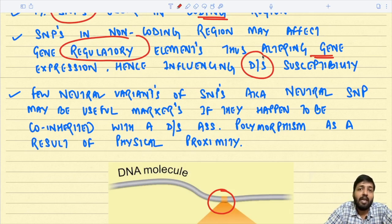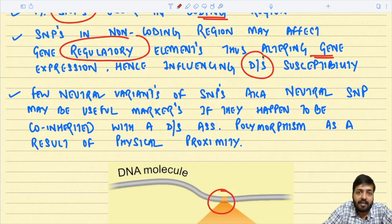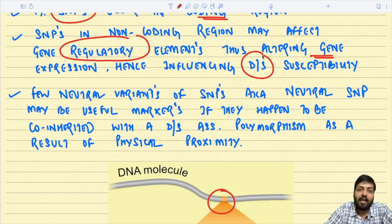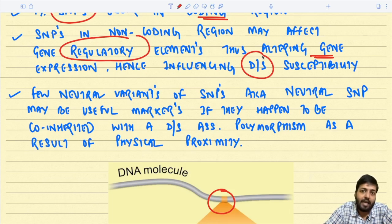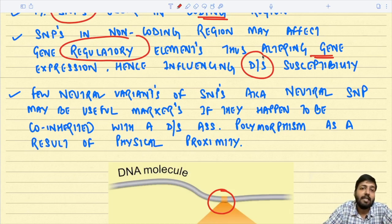For example, if there is a regulatory area in the DNA controlling expression of one particular enzyme, a single nucleotide polymorphism in this regulatory area can cause that particular gene encoding the enzyme to be silenced. As a result, the enzyme is not expressed and the person will have the disease. This is how SNPs can play a role in disease susceptibility.